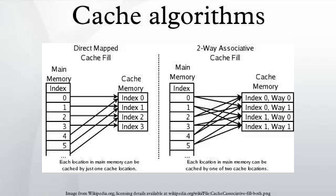The most efficient caching algorithm would be to always discard the information that will not be needed for the longest time in the future. This optimal result is referred to as Bélády's optimal algorithm or the clairvoyant algorithm.